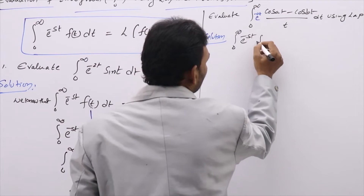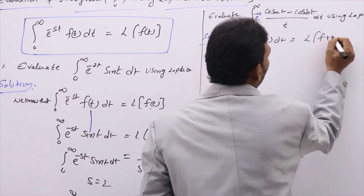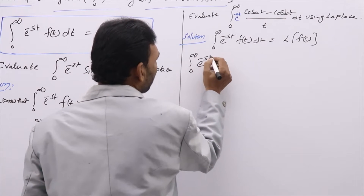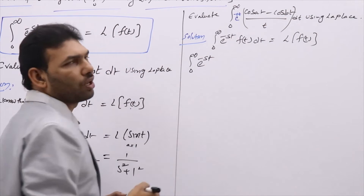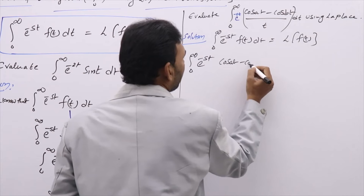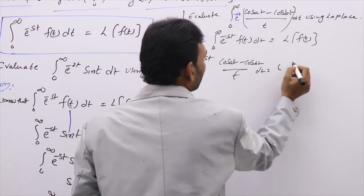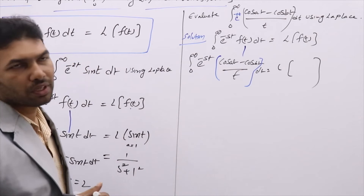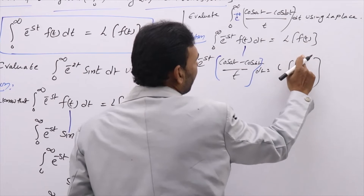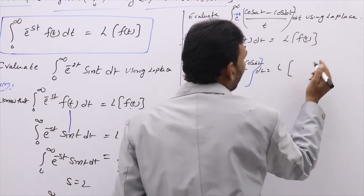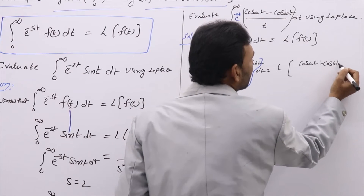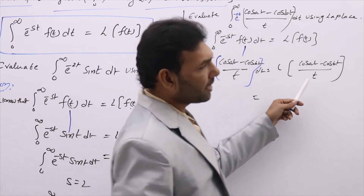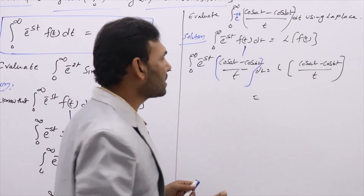To solve, first write the formula: integral from 0 to infinity of e^(-st) times f(t) dt equals L{f(t)}. The leftover term after e^(-st) is (cos(at) − cos(bt))/t dt. So in place of f(t), we write (cos(at) − cos(bt))/t. Since we have division by t, we apply the division-by-t rule in Laplace.